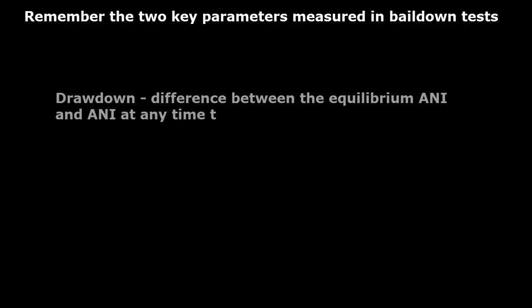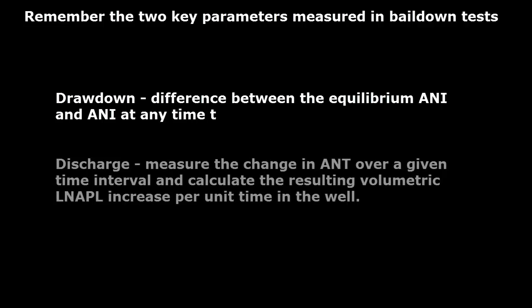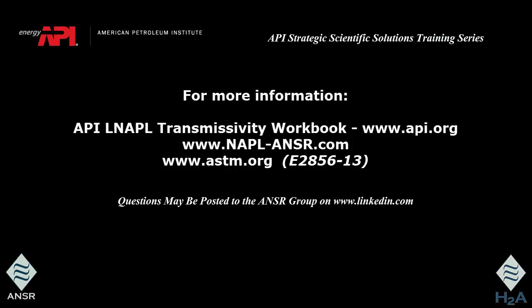In conclusion, remember the two key parameters measured in bail-down tests. Drawdown is the difference between the equilibrium air-NAPL interface and the air-NAPL interface at any time t during the test. Discharge is calculated by measuring the change in apparent NAPL thickness and then calculating the volumetric LNAPL increase per unit time. These two key parameters allow calculation of LNAPL transmissivity. We hope this video, sponsored by the American Petroleum Institute, has been informative and useful. For further information, please visit the webpages shown, and questions may be posted to the answer group on www.linkedin.com.